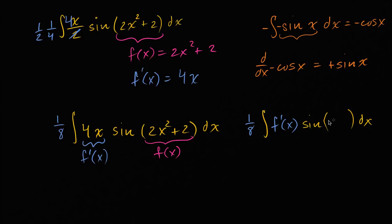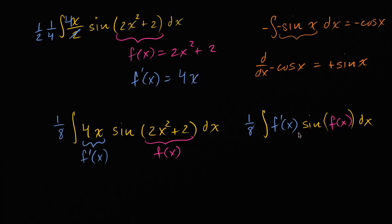By the reverse chain rule, I have a function and I have its derivative here, so I can just take the antiderivative with respect to that function. This is essentially what we're doing in u-substitution. You could set u equal to two x squared plus two, and then du is going to be four x dx. But now we're getting a little practice doing it more in our heads.